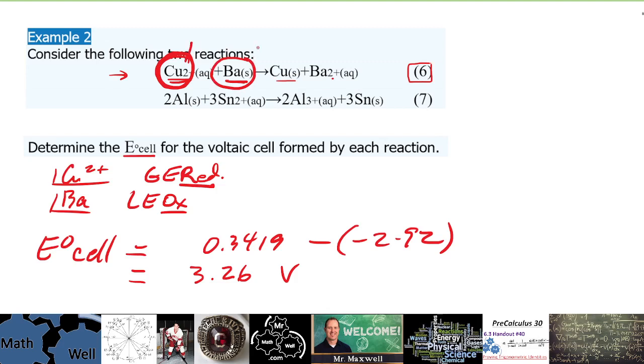Yesterday when we did this, the one confusing thing was that these were each written with their ions first. So in the chart you'll see Cu2+ plus two electrons produces Cu, and that has 0.3419 voltage. And then you'll also see that barium 2+ plus two electrons gives barium solid, and that's negative 2.92.